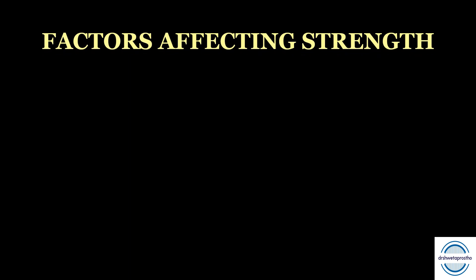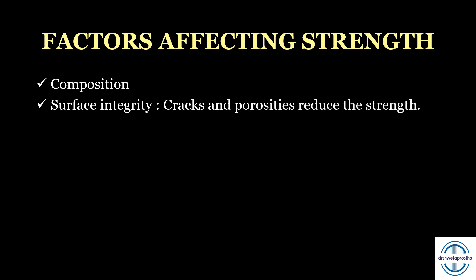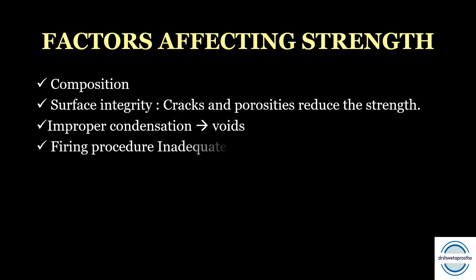Factors affecting strength include: first, composition — core ceramics have much greater strength than veneering ceramics; second, surface integrity — cracks, porosities, or surface imperfections reduce strength; third, improper condensation introduces voids and reduces density; and fourth, firing procedure — inadequate or over-firing will also weaken the structure.